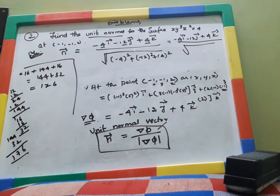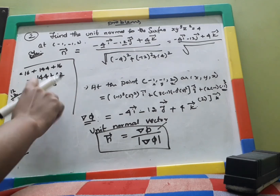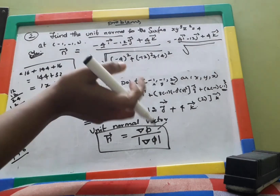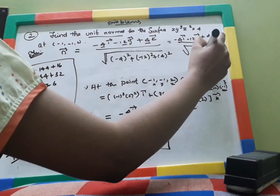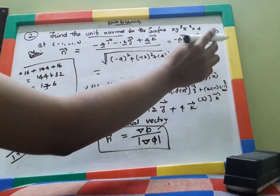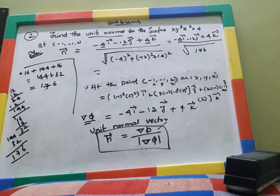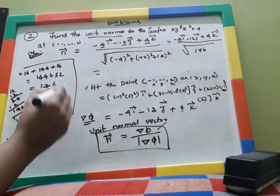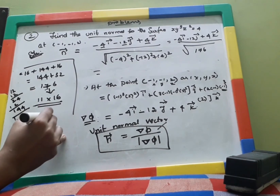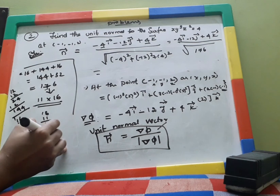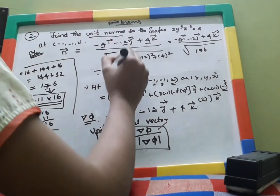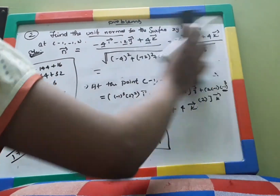Simplifying √176: we check if 176 can be factored as a perfect square times another number. We find 176 = 16 × 11, and since 16 is a perfect square, √176 = 4√11.